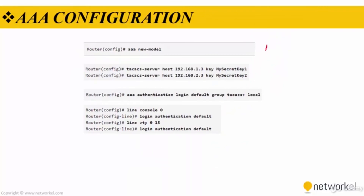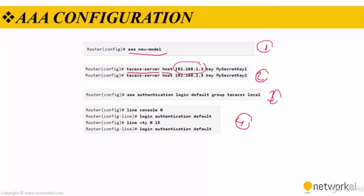Here is how we can configure AAA. We have four main steps. In the first step, AAA is enabled globally using the 'aaa new-model' command. In the second step, the TACACS+ server IP addresses and shared secrets to be used in communication with the servers are determined. The command is 'tacacs server', then 'host' followed by the IP address of the TACACS+ server, and the 'key' command with the shared key.